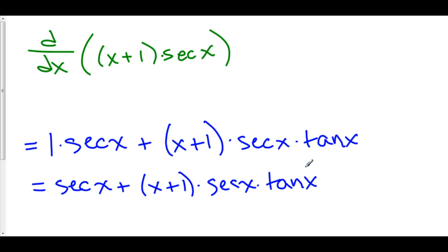And that is the derivative. You could, of course, factor out a secant x and make it look nicer. But we have a general sense of how we use product rule: take the derivative of the first times the second, plus the first times the derivative of the second.